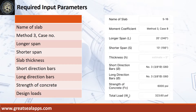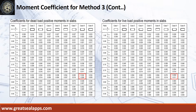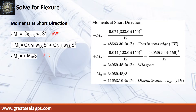Enumerate input parameters required: name of slab S16, Case 8 Panel Design, longer span 20 feet, shorter span 13 feet, slab thickness 5 inches, main bars 3/8-inch diameter Grade 60, strength of concrete 6,000 PSI, and total load 323.6 PSF. Use Case 8 at m equals 0.65; refer to coefficients for dead load and live load.